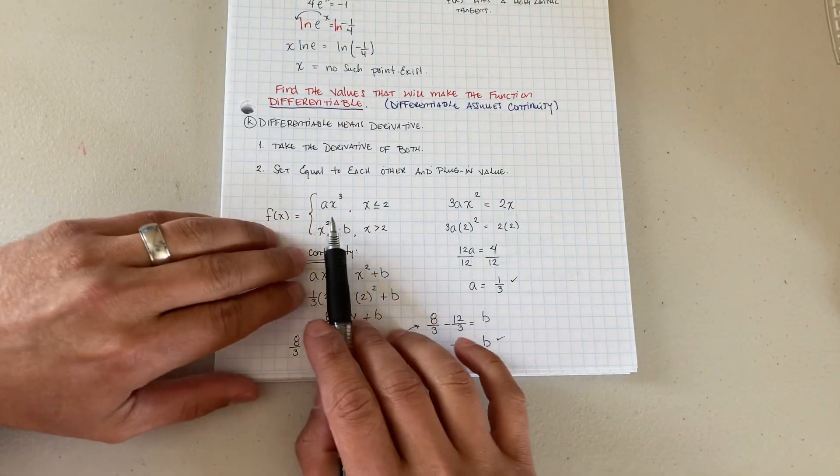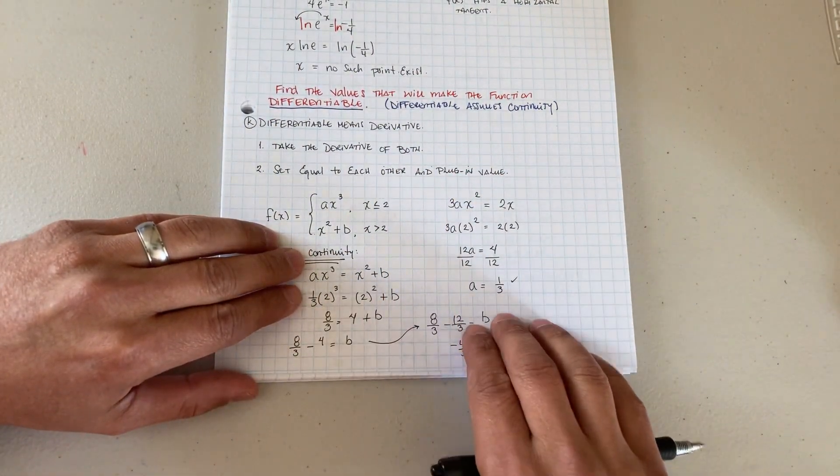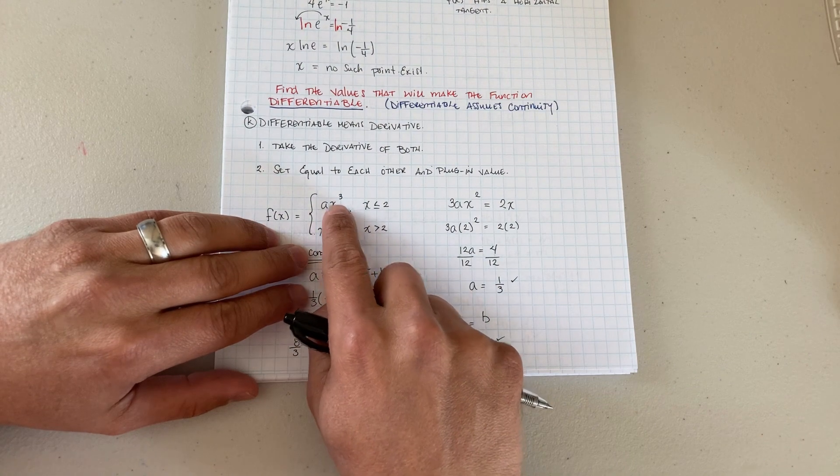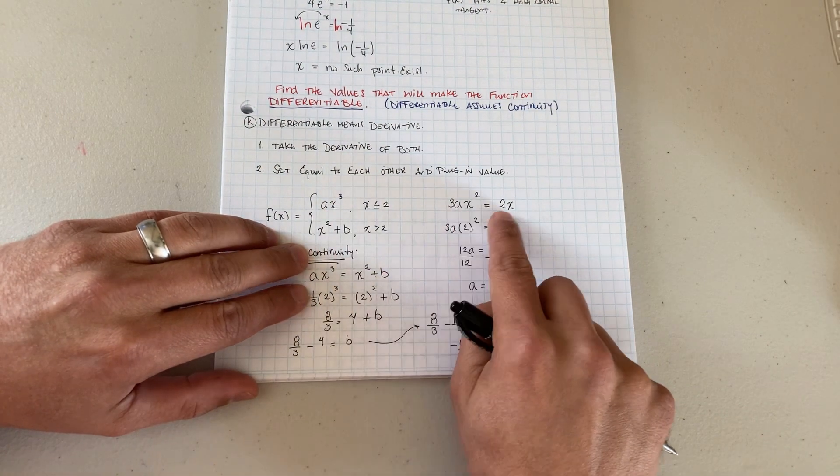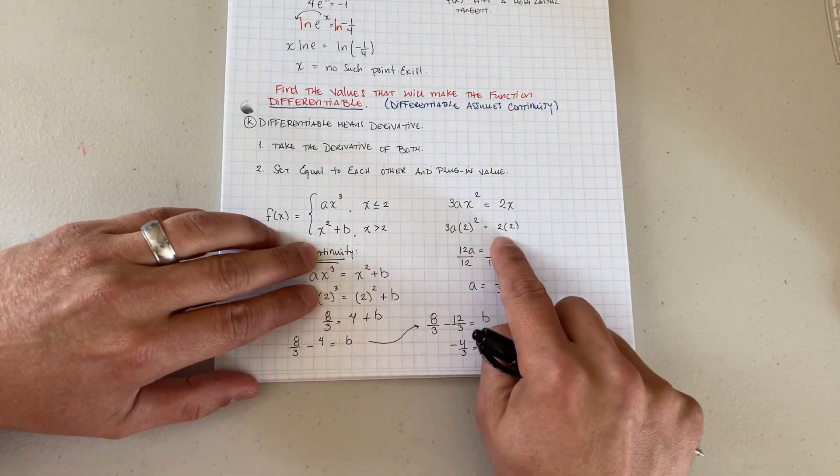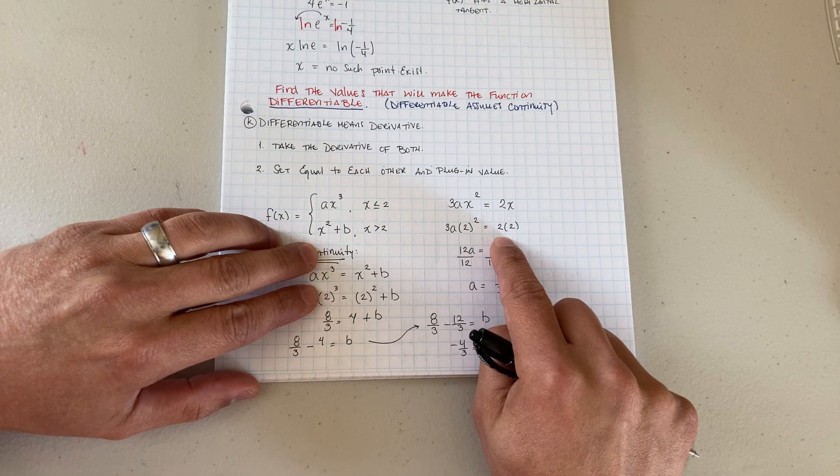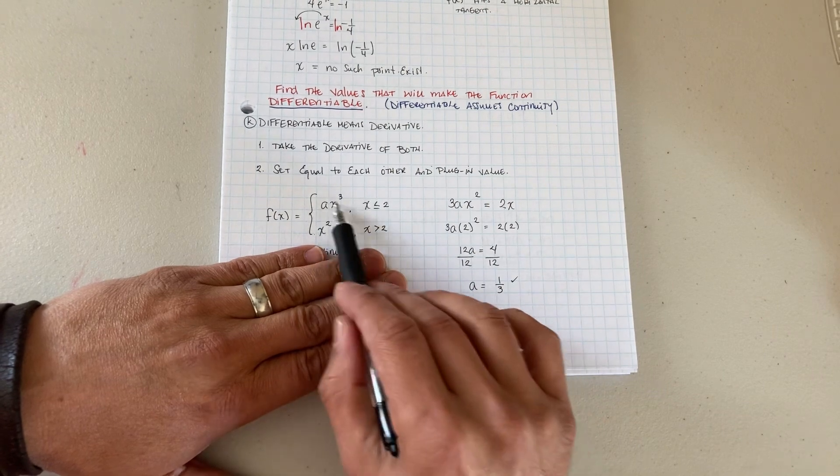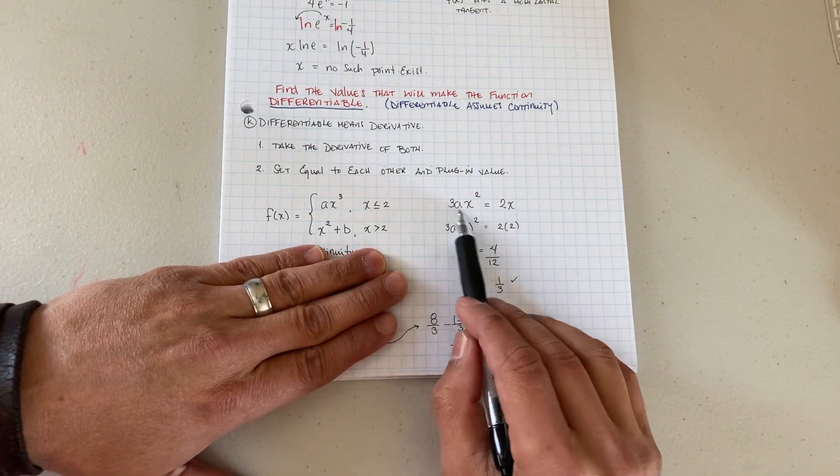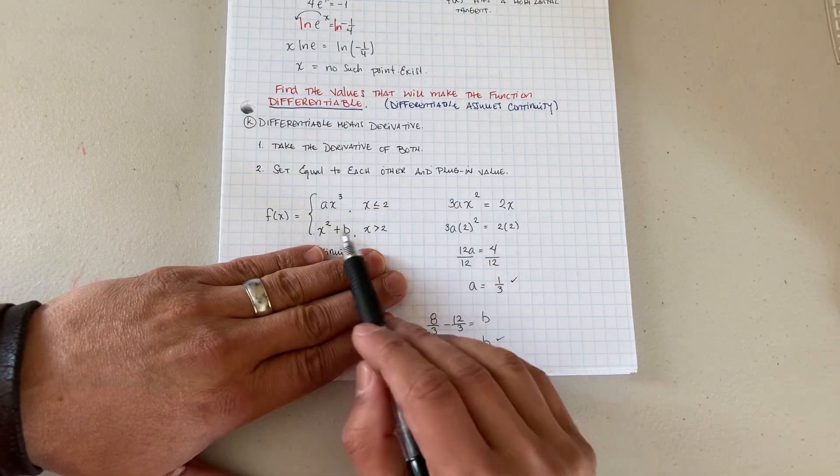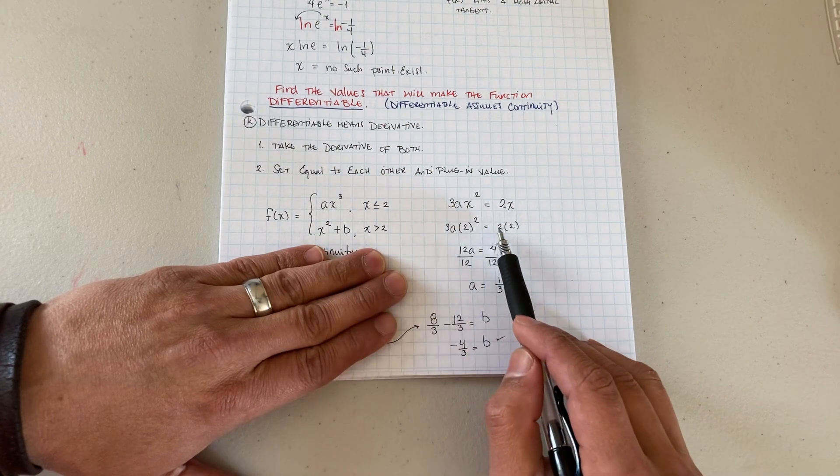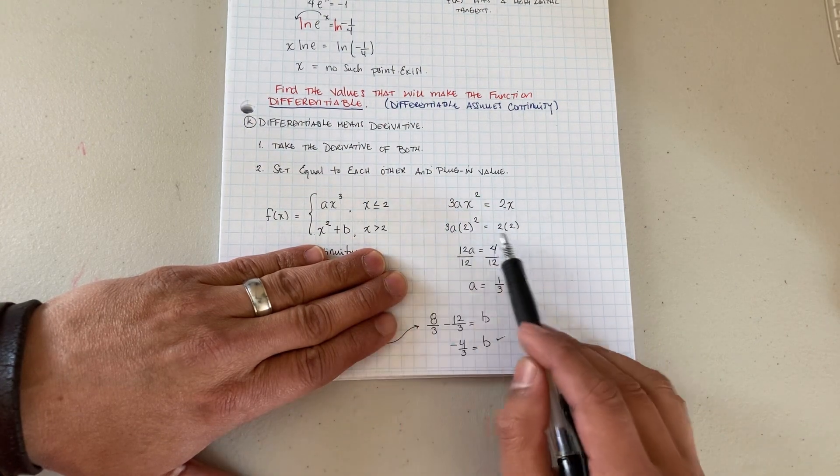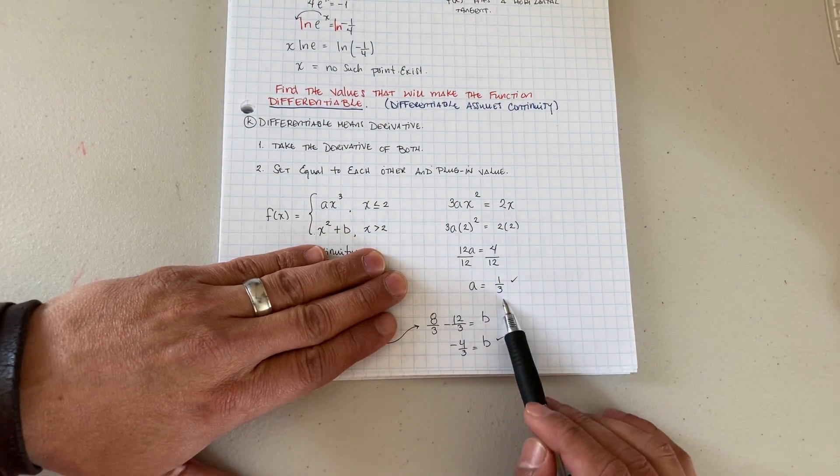So here if you notice, we're over here, it becomes 3ax squared equals 2x. You see what I did, don't look at this part just yet. So we take the derivative of this guy gives you this. Remember a is a constant and then x squared becomes 2x. We plug in our 2, we end up with a equals 1/3.